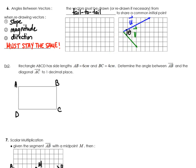Let's try an example. Rectangle ABCD has side lengths AB which is 6 centimeters and BC which is 4 centimeters. Determine the angle between vector AB and vector AC to one decimal place. In order to calculate that this really looks like a right angle triangle to me and I'm going to do some trig. So tan theta is opposite over my adjacent and then tan inverse and if I calculate that approximately 33.7 degrees.